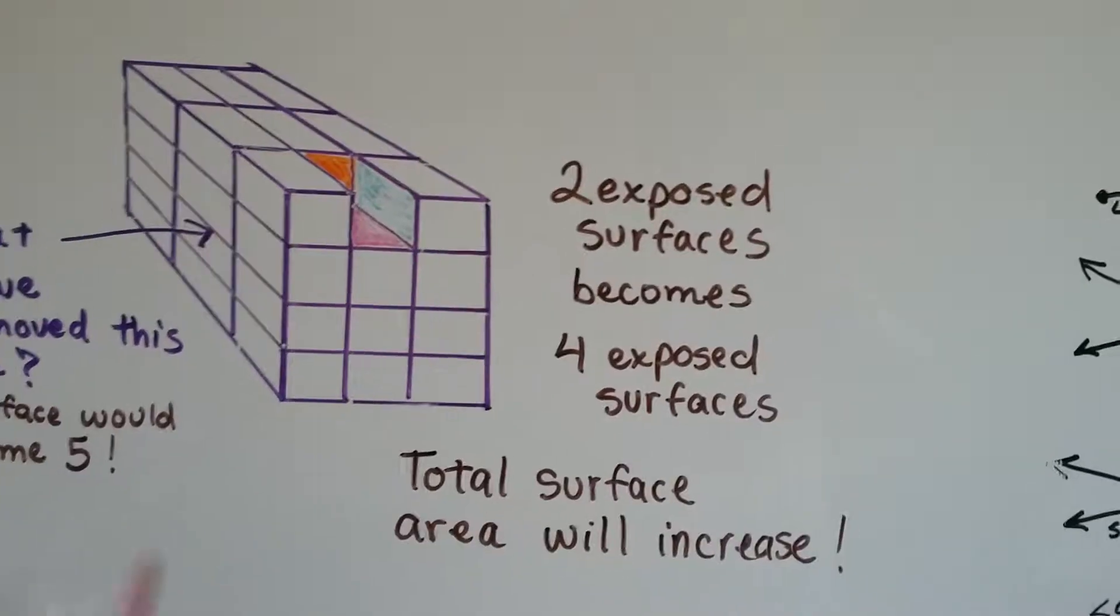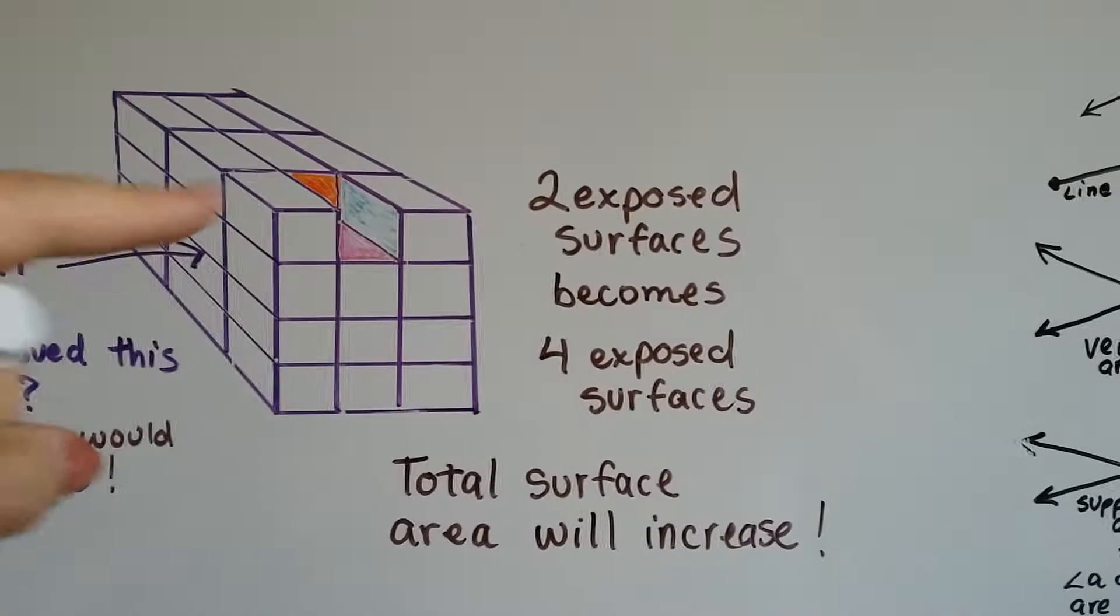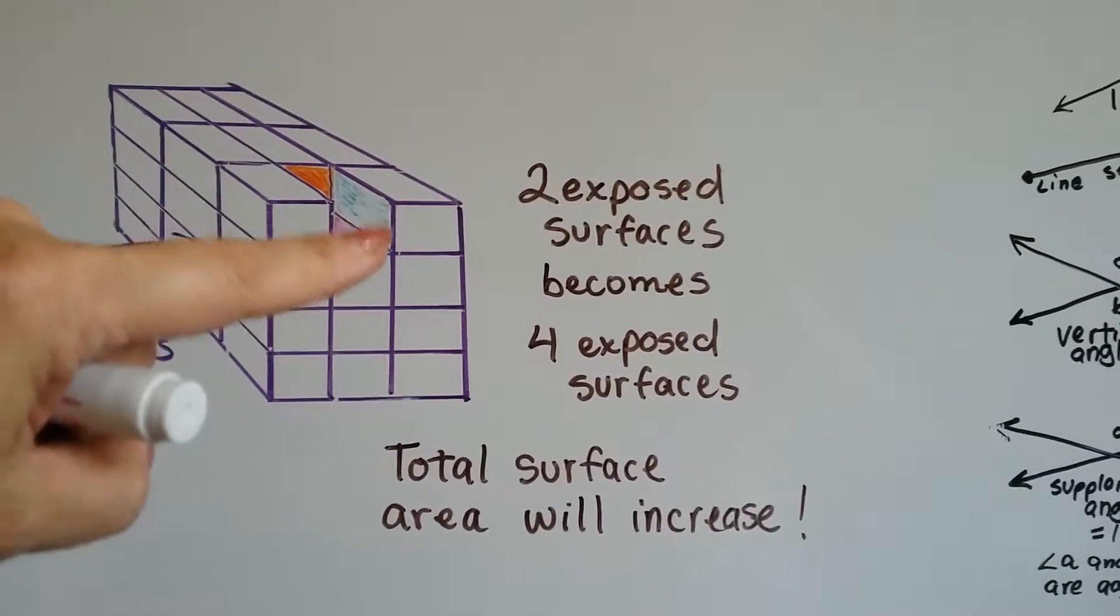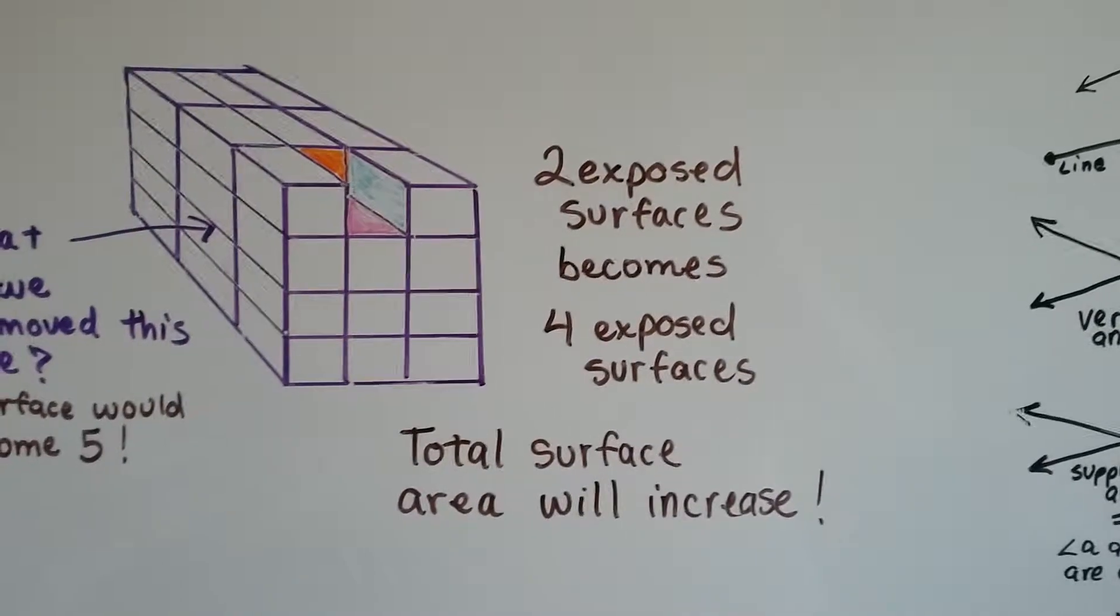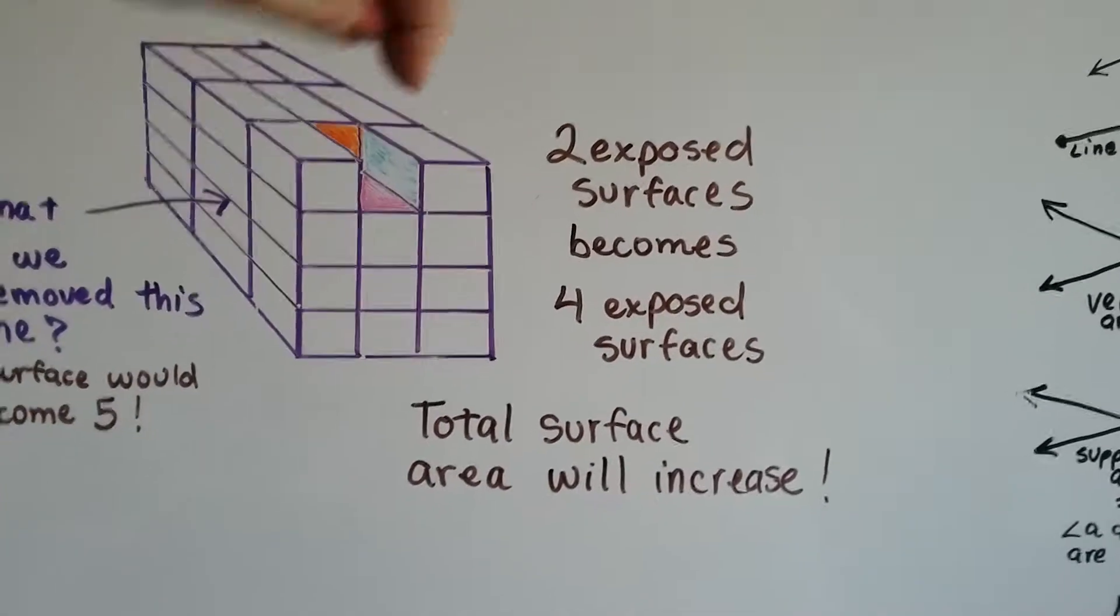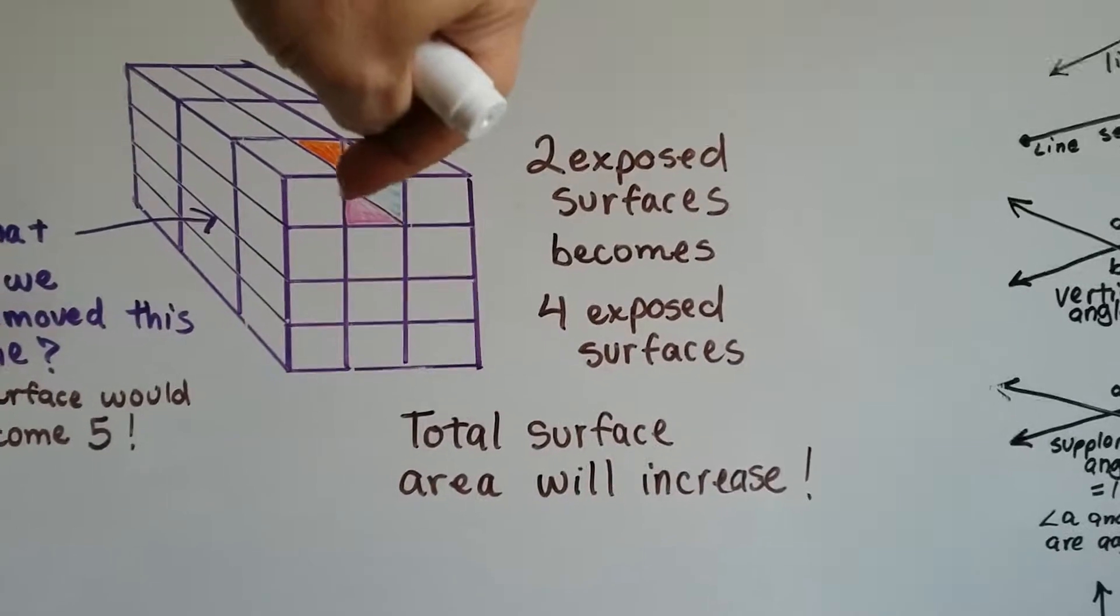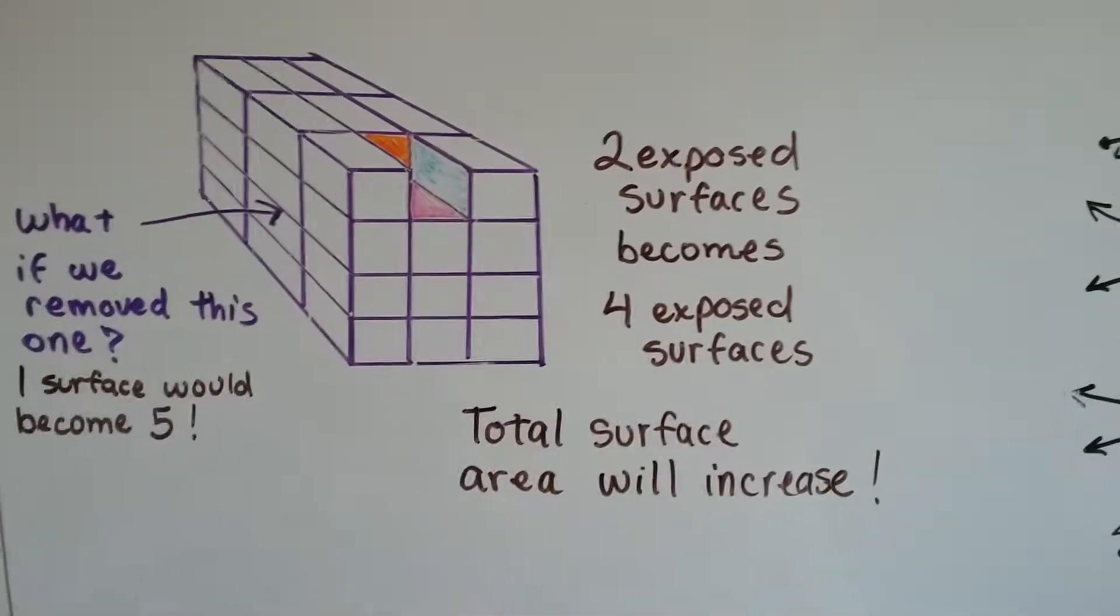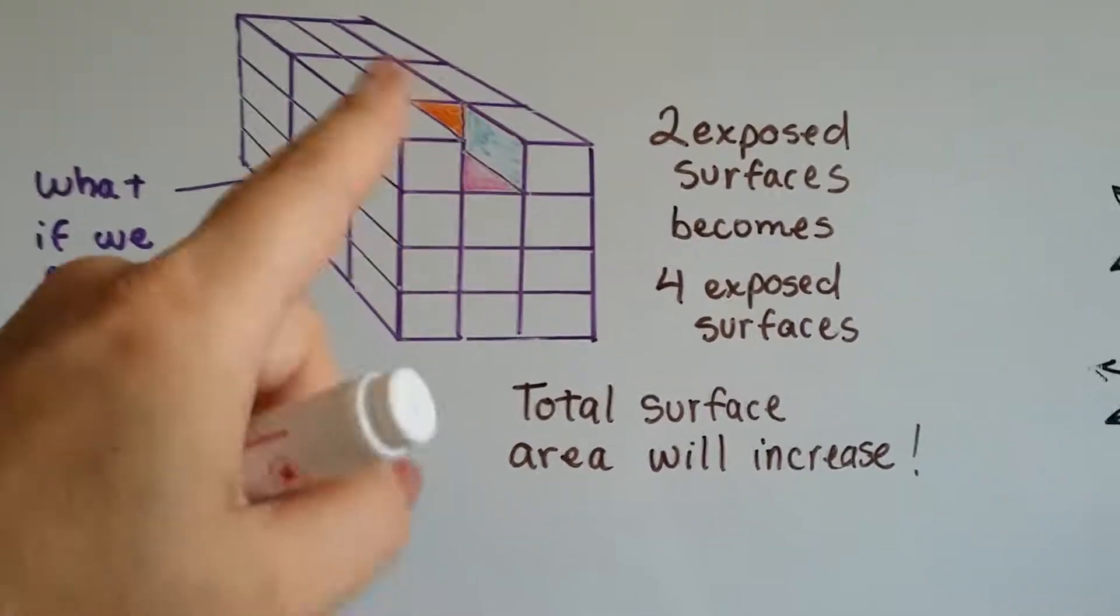Look at this big block here. This big block has one cube missing. Now before, there was a surface showing on the top and a surface showing on the side here in the front. But because we took the cube away, there's now four exposed surfaces. This blue side, the orange back, another blue side that we can't see that's on the side of this one, and the pink bottom. It became four surfaces when we took away that one cube. So two became four.